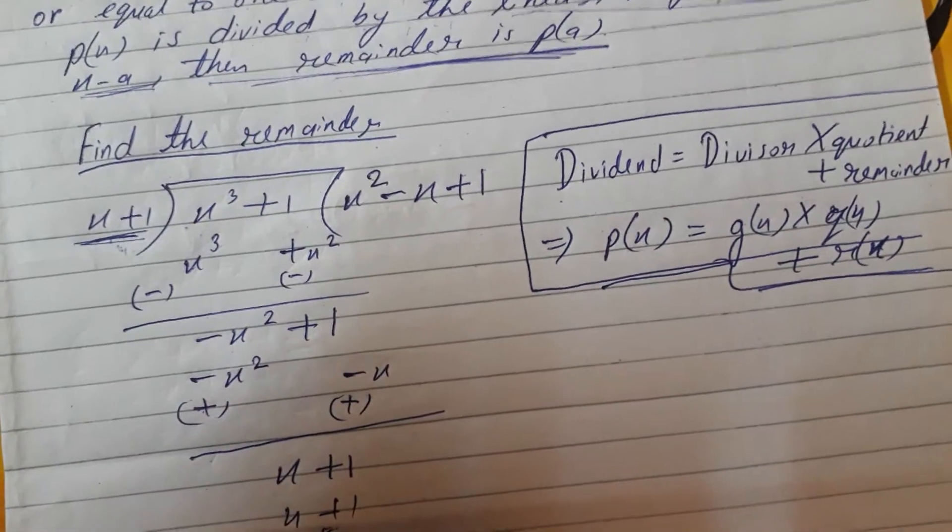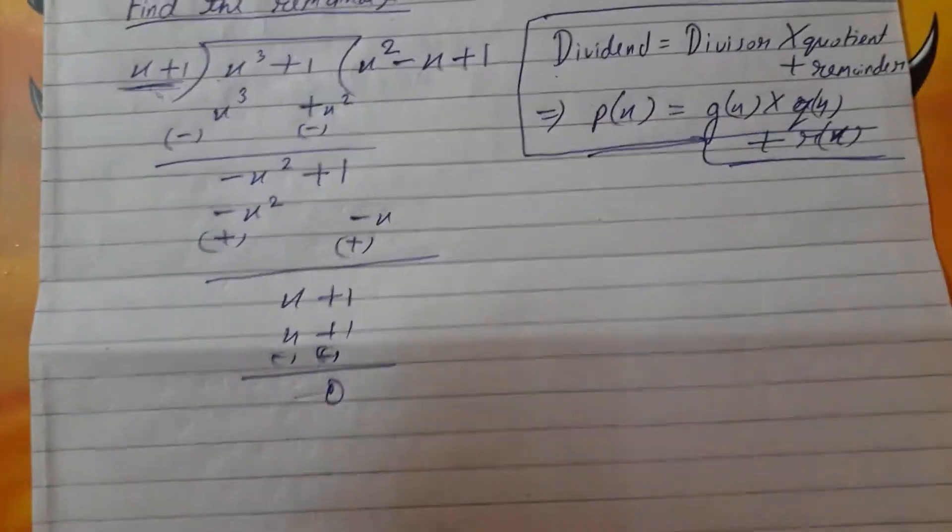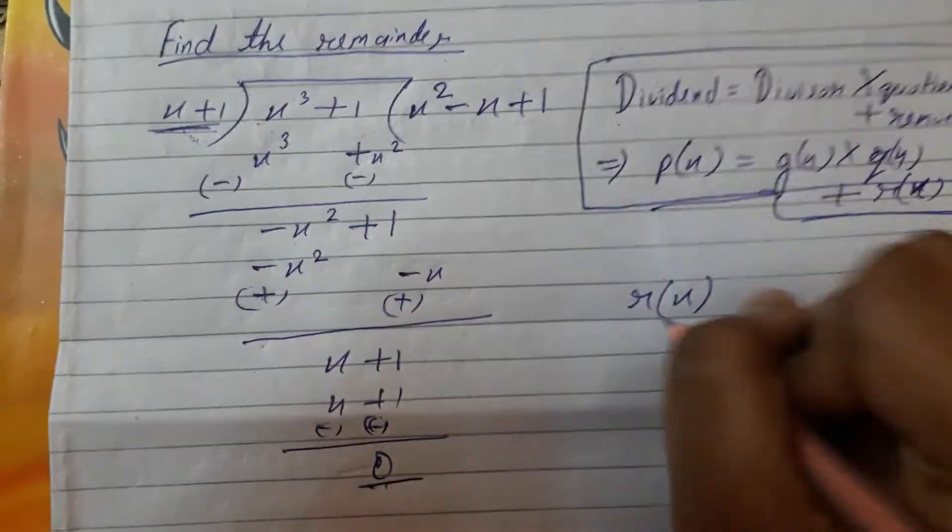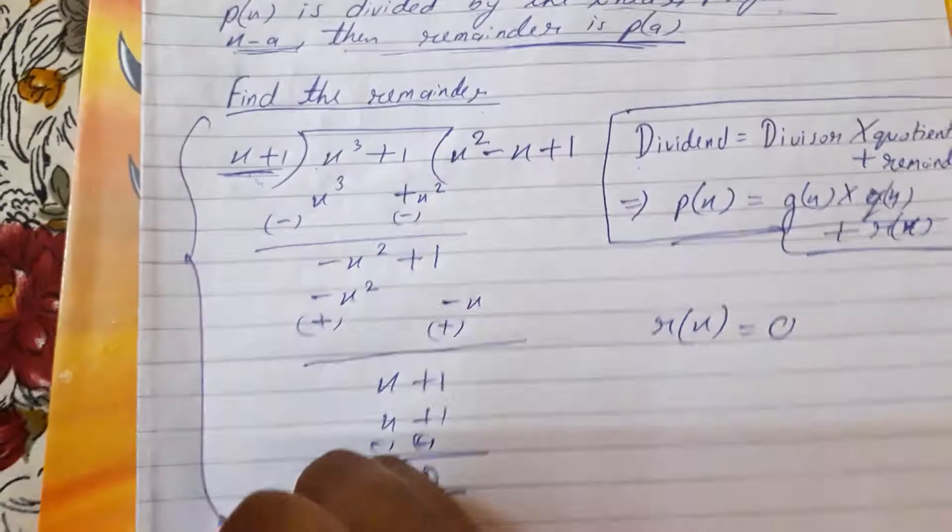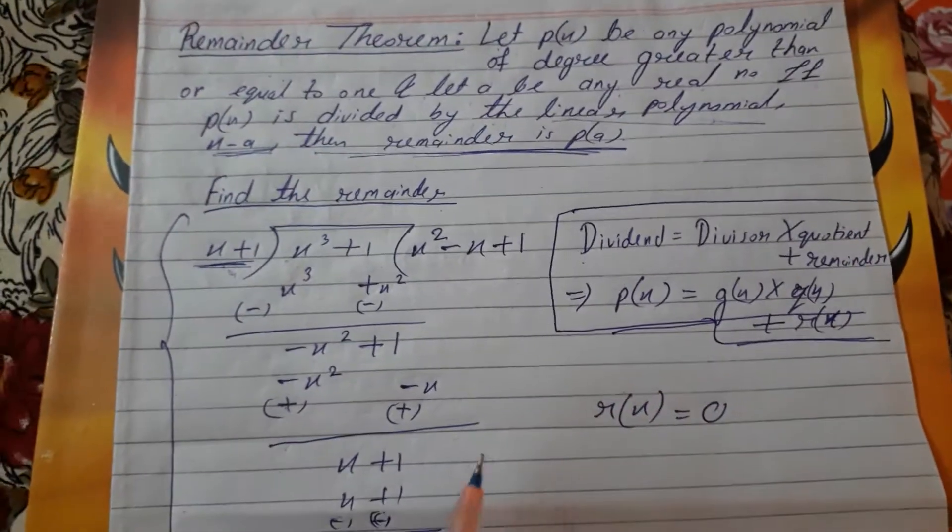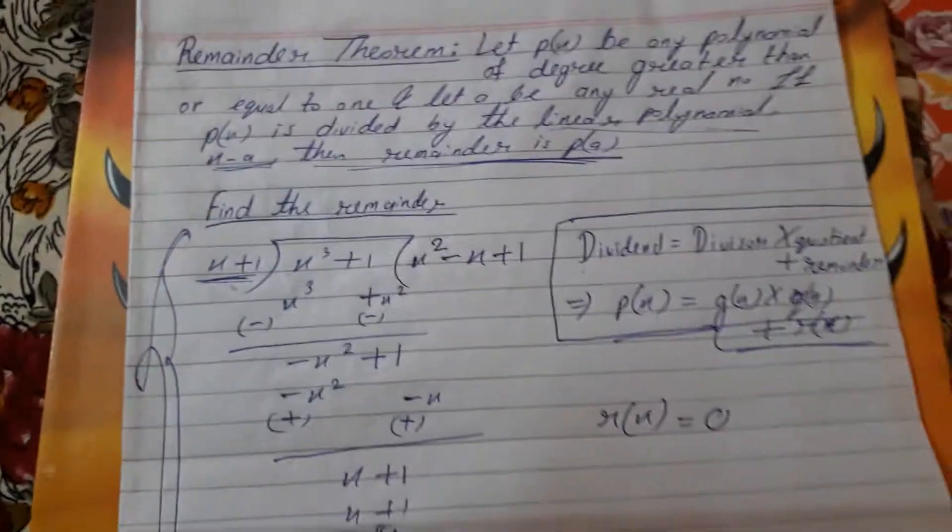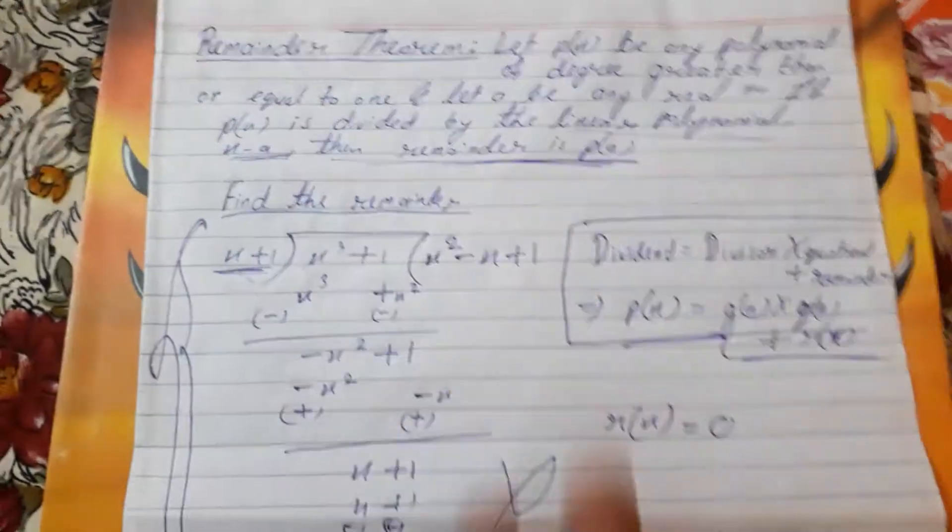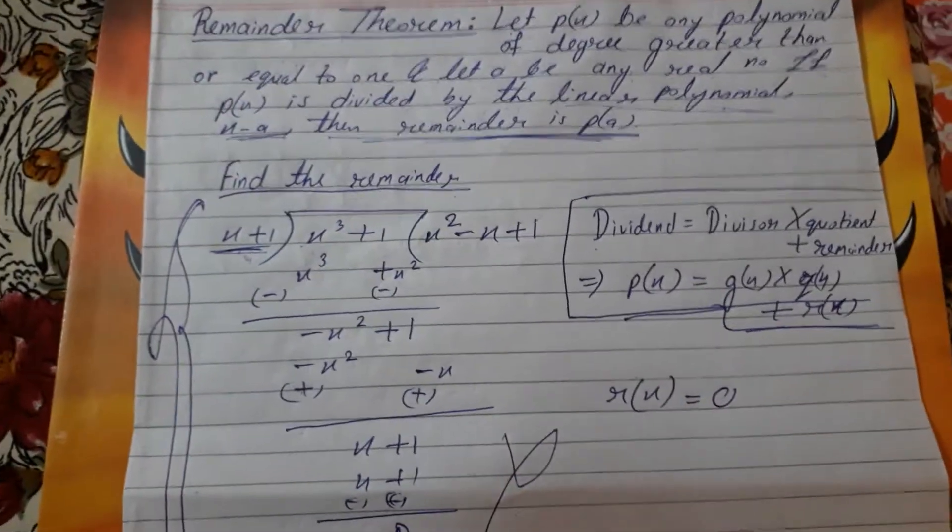So you can see that here the remainder would be 0. It is the actual long division. But if you know this Remainder Theorem, you need not find the remainder with this actual long division. You need not waste your time doing this long type of division.